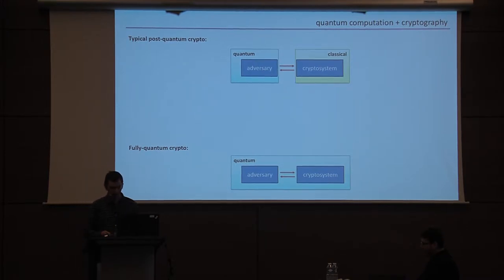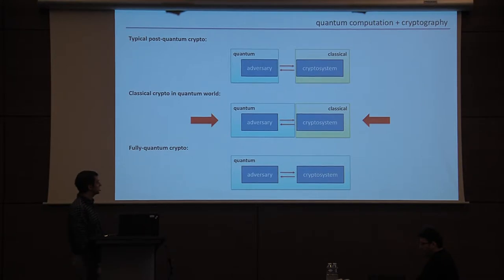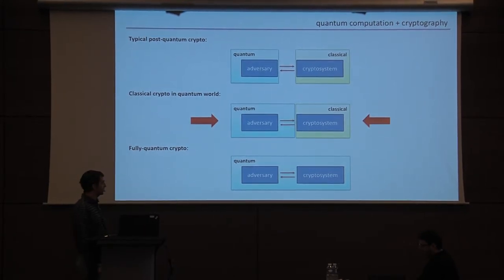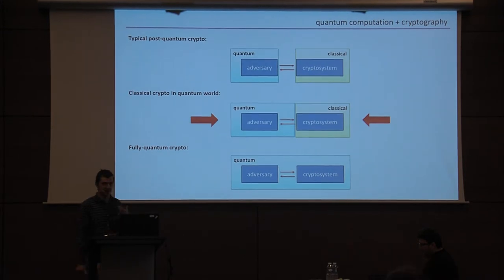In a more sort of far-off distant future setting, we might also imagine a scenario in which we are quantum and our crypto system is quantum, but also in the past few years people have started thinking about a sort of intermediate model in which the quantum adversary has somehow managed to creep a little bit closer to us, and now can also somehow quantumly interface with our classical crypto system. So this is the model that I want to talk about today.